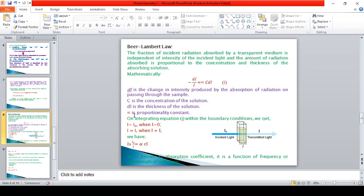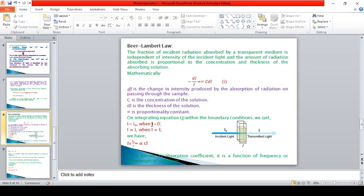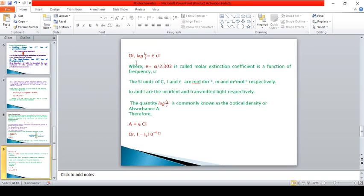C is the concentration of the solution, dL is the thickness of the solution, and alpha is a proportionality constant. If we integrate this equation using boundary conditions I equals I0 when L is 0 and I equals I when L is L, then we have ln I0 by I equals alpha CL. This alpha is known as absorption coefficient. It is a function of frequency or wavelength of radiation. We can express natural logarithm as log base 10: Log I0 by I equals epsilon CL.